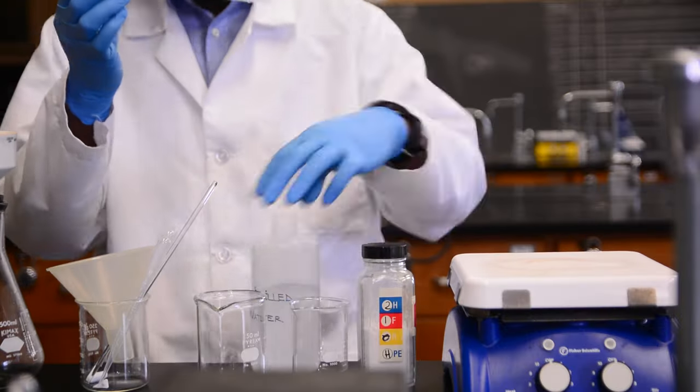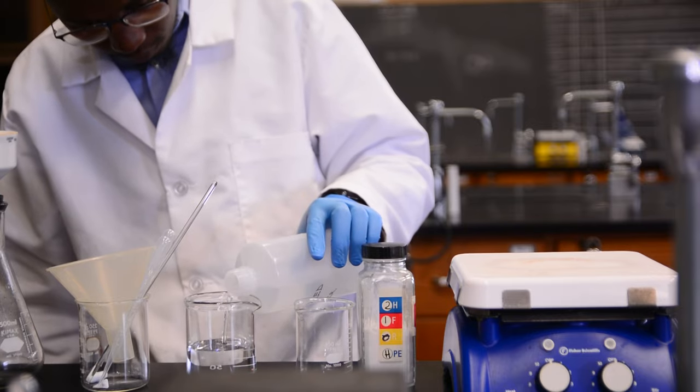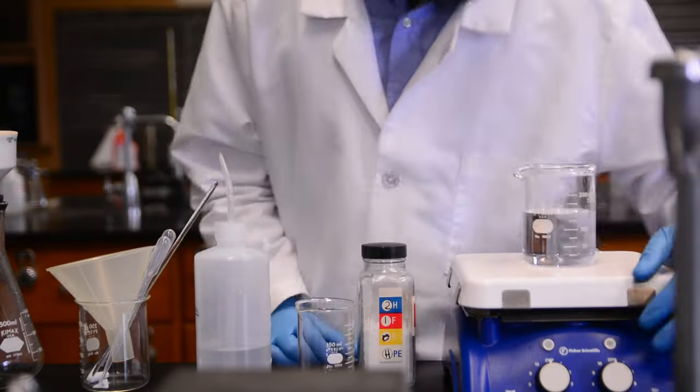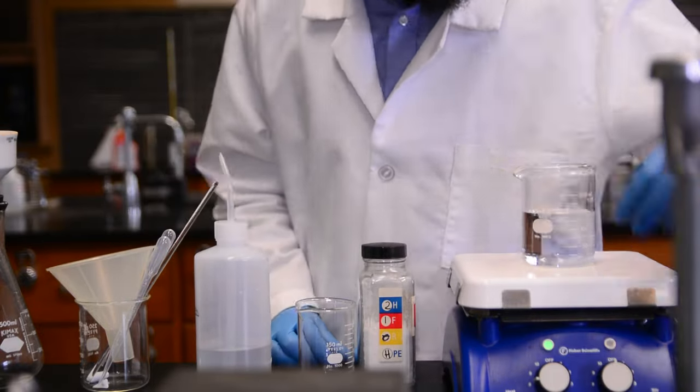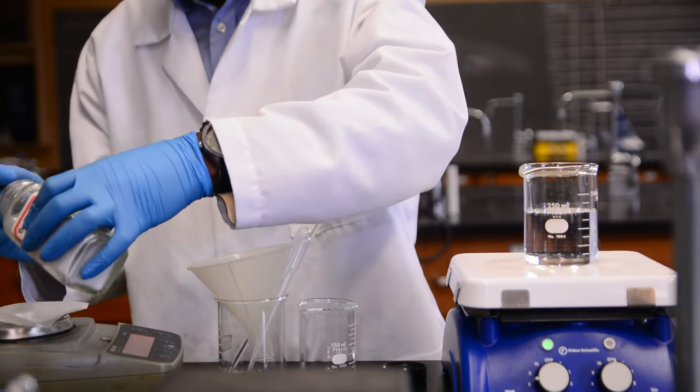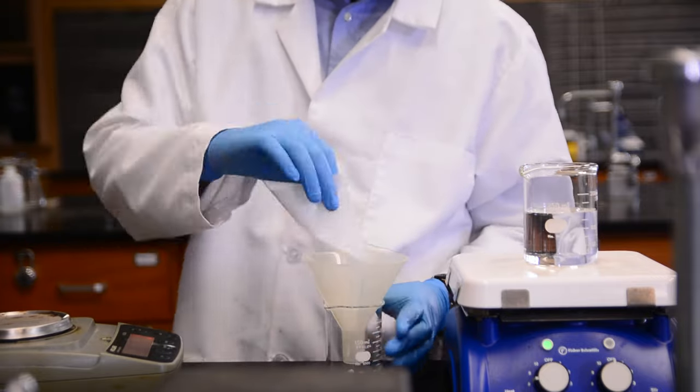We are ready to begin the recrystallization. We will start by heating up 150 milliliters of pure distilled water in a 250 milliliter beaker on a hot plate. As that heats up, let's weigh our impure product. We're going to be using 3 grams of benzoic acid today. Let's add the powder to a clean, dry 150 milliliter beaker.